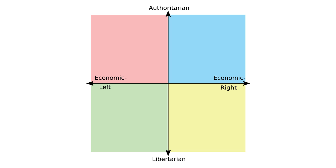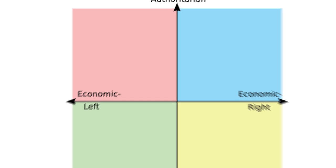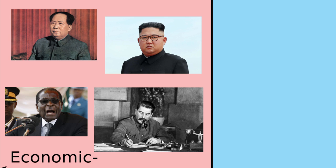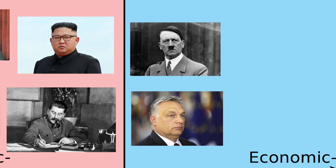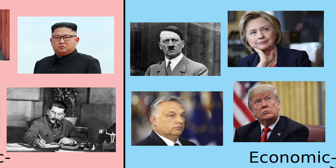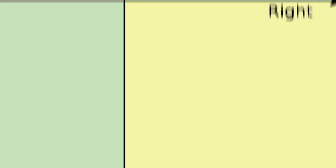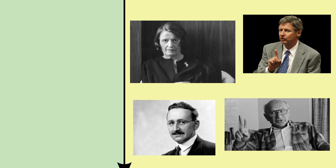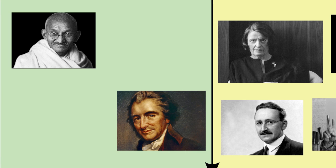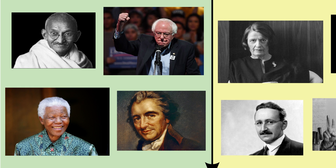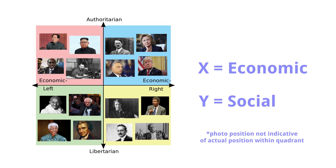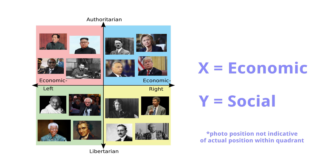To give you a few examples of notable figures from each quadrant: you'll find Mao, Stalin, Kim, and Mugabe in the authoritarian left quadrant; Hitler, Viktor Orban, Hillary Clinton, and Donald Trump in the authoritarian right; Ayn Rand, Milton Friedman, Friedrich Hayek, and Gary Johnson in the libertarian right; and Gandhi, Thomas Paine, Bernie Sanders, and Nelson Mandela in the libertarian left. To reiterate, the x-axis is economic stances and the y-axis is social stances.